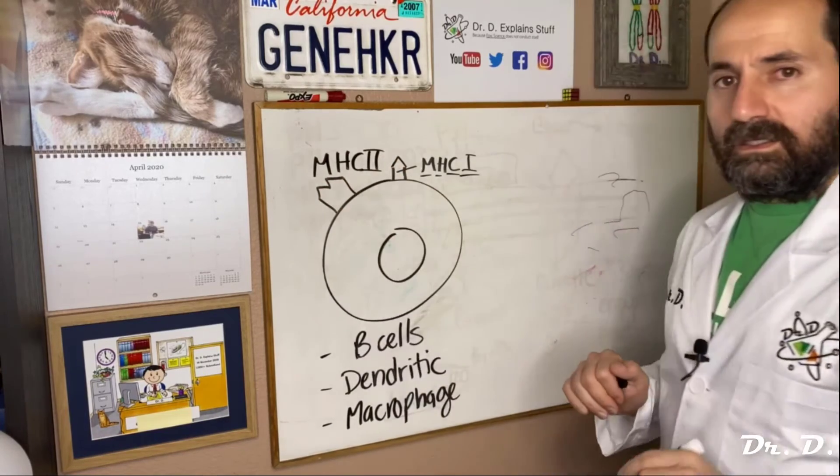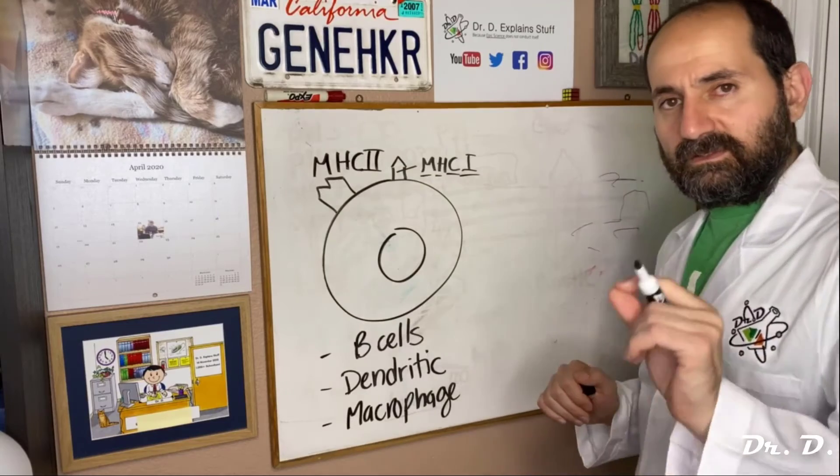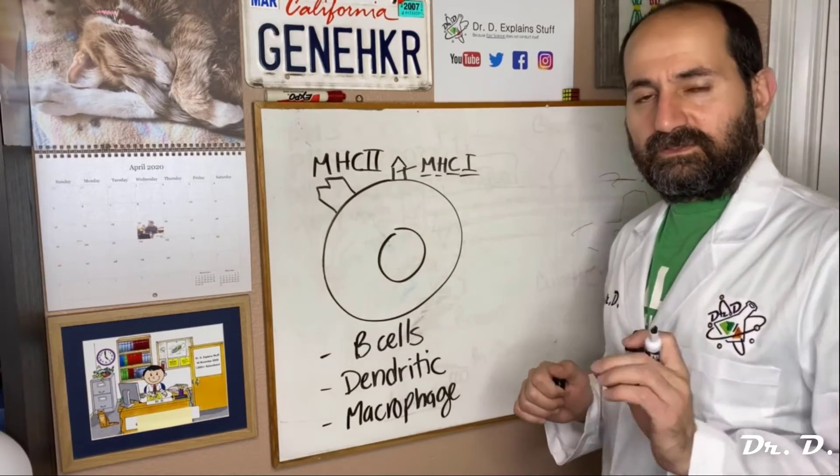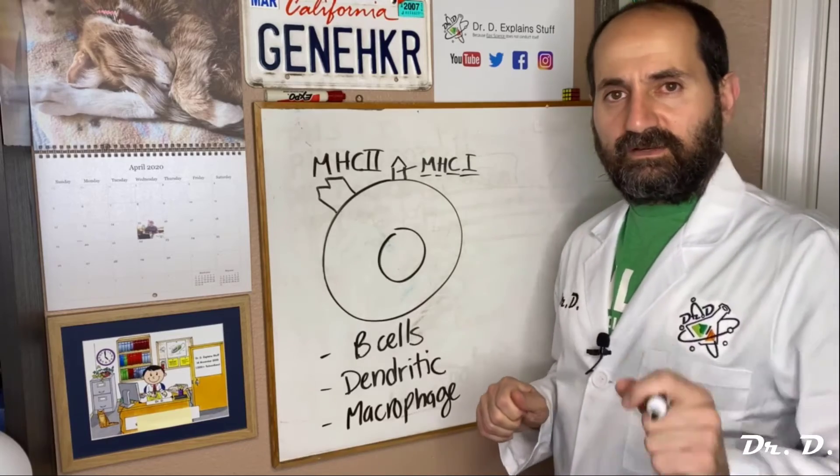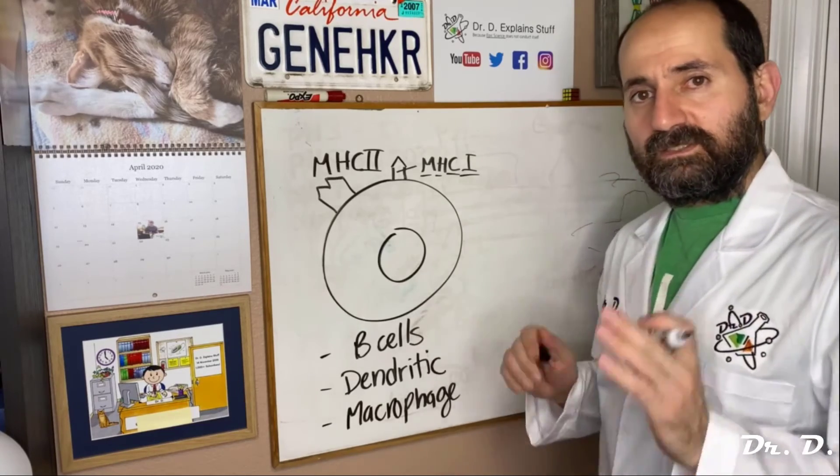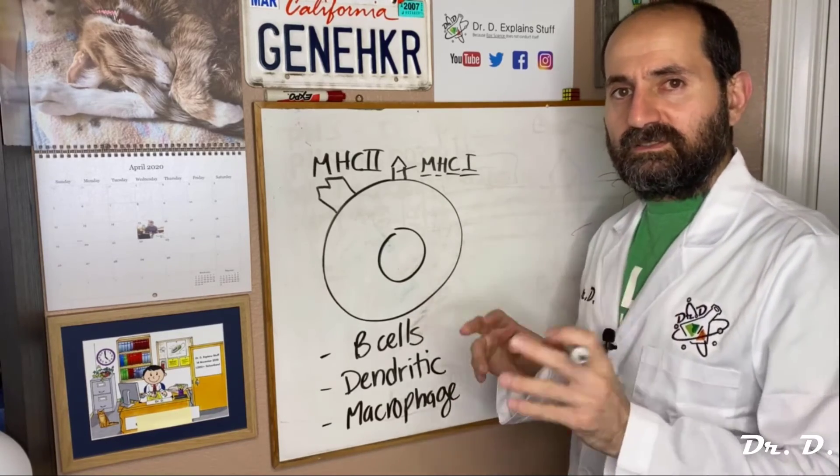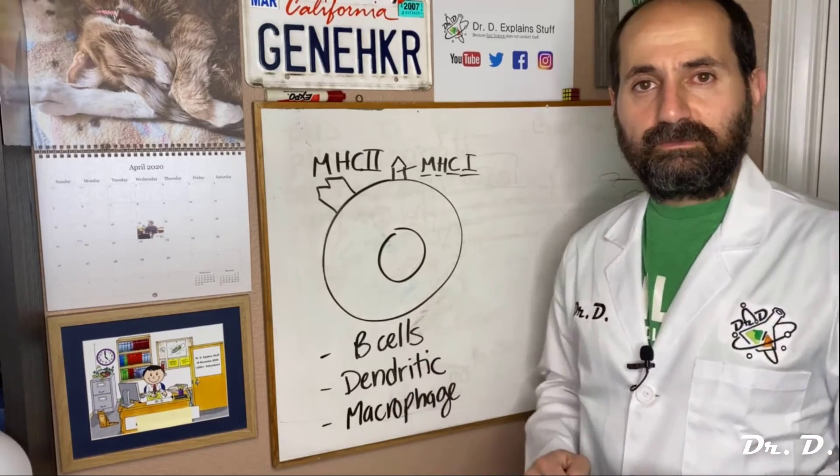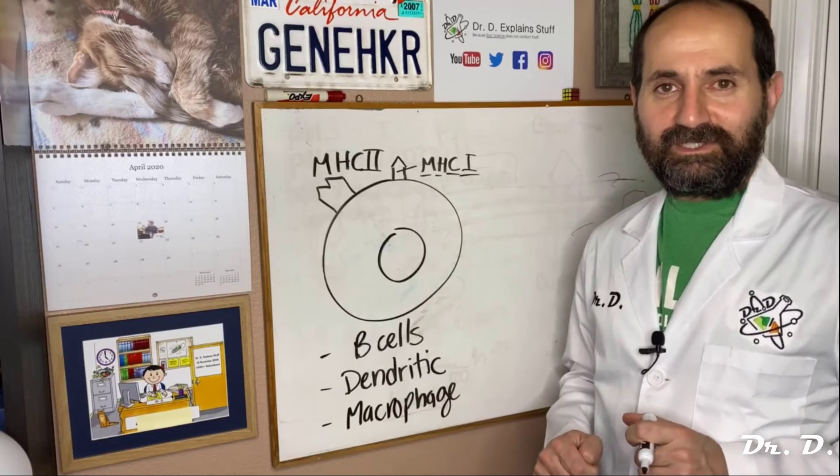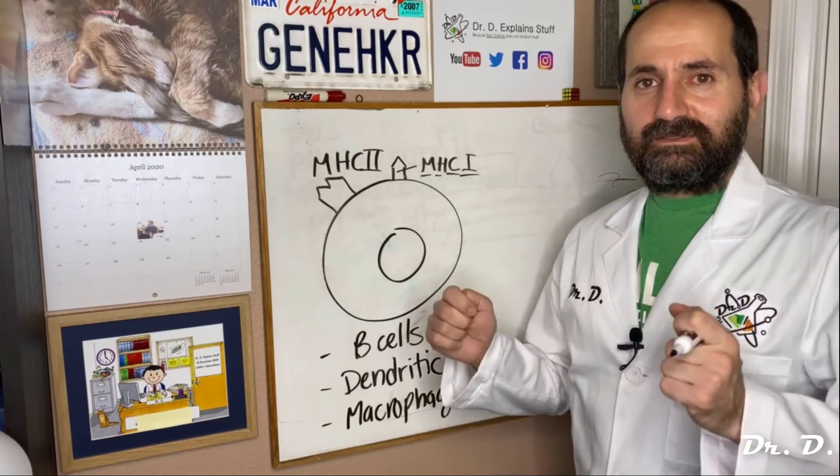So there you go. That's how you know if a cell has MHC1 or MHC2. All nucleated cells have MHC1, but only the professional antigen presenting cells—B cells, dendritic cells, and macrophages—have both. I hope that cleared up any issues, and I'll catch you guys next time.